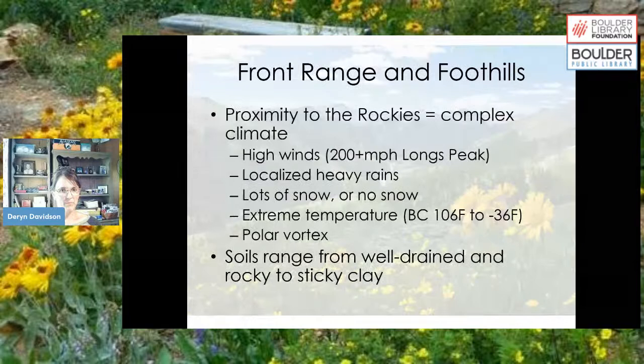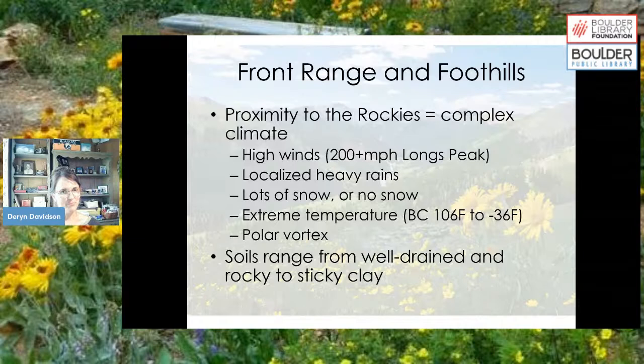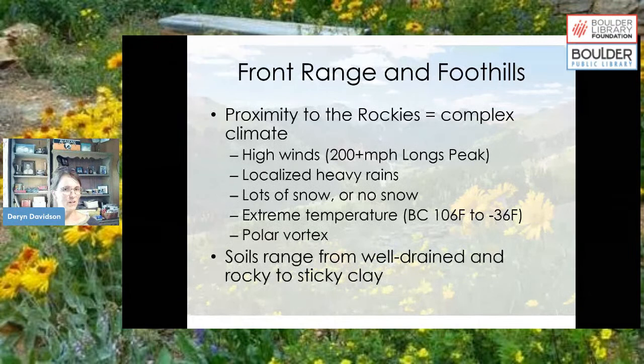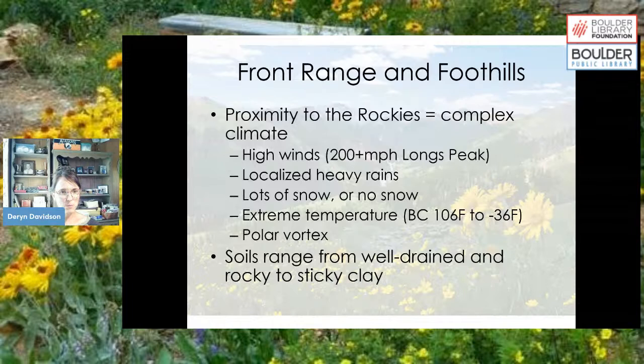One thing that really defines the front range and is important when talking about plants is our proximity to the Rocky Mountains. Those create a really complex climate. We can have high winds — the state record near Long's Peak was over 200 miles an hour — localized heavy rains, tons of snow, no snow, periods of drought, and extreme temperatures. The point is, it's pretty hard to be a plant here.